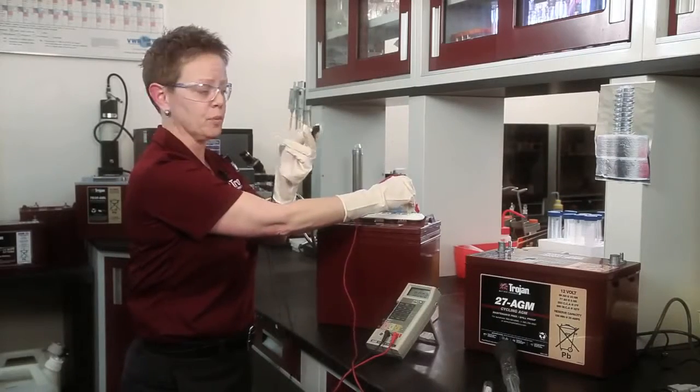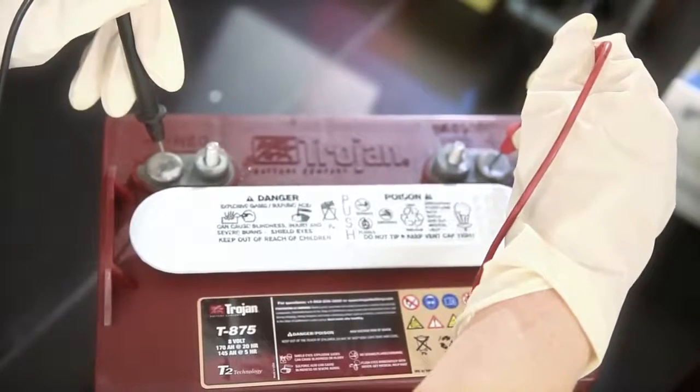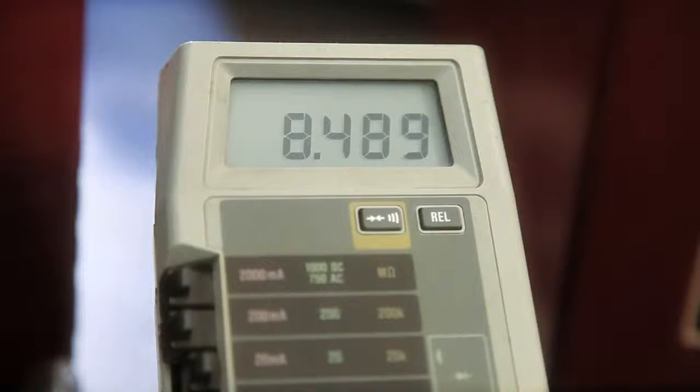Take the negative probe, which is black, and connect it to the negative terminal on the battery, and you read the voltage. 8.48, which is an acceptable voltage.